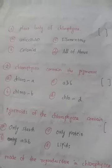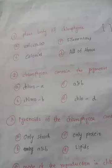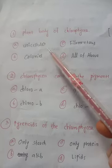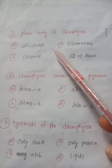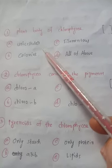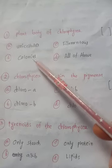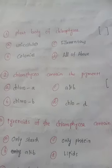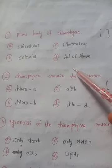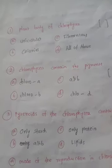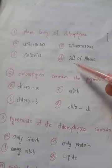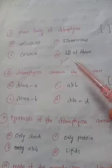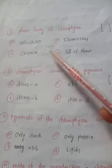Now some questions from Chlorophyceae. First: the plant body of Chlorophyceae is — A. Unicellular, B. Colonial, C. Filamentous, D. All of the above. The answer is D — the plant body of Chlorophyceae is unicellular, or colonial, or filamentous.